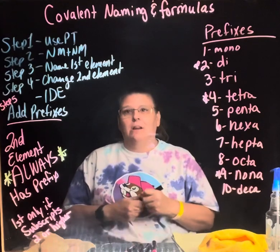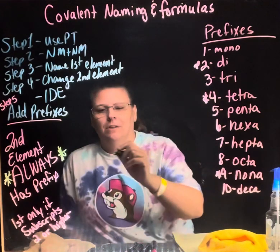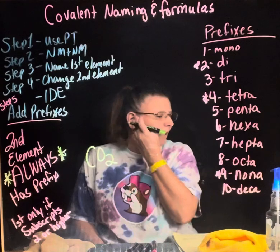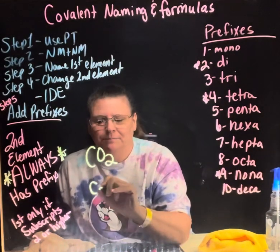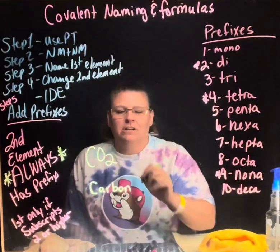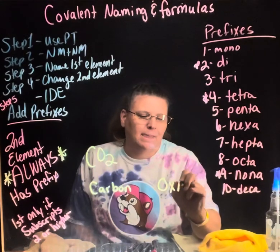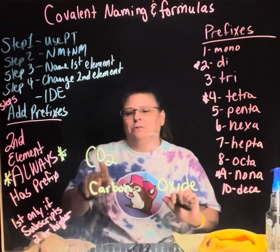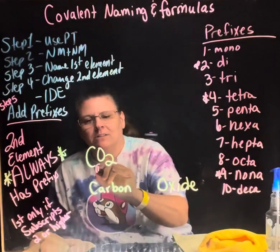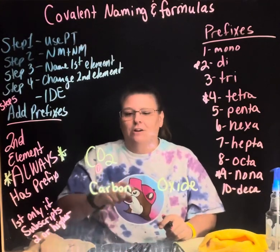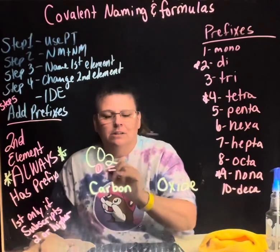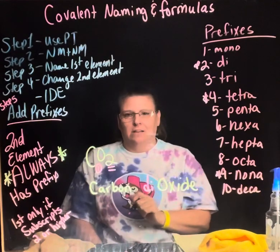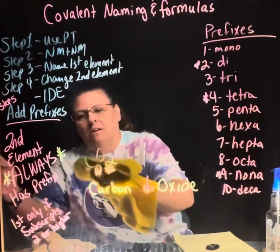Let's start with CO₂. First, both are non-metals — carbon and oxygen. Find carbon as the first element. Oxygen becomes 'oxide' because we change the name when bonded. The first element has a subscript of one, which is not two or higher, so leave it alone. The second subscript is two, so we use 'di.' The final answer is carbon dioxide.